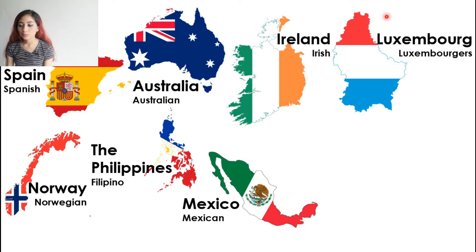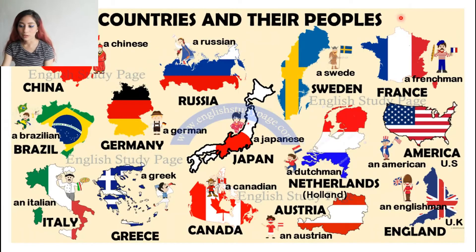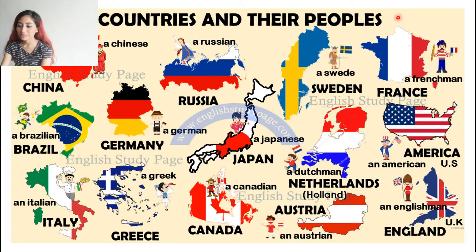Which of these countries would you like to visit? I would like to visit them all. For example, I would like to visit Ireland because Ireland is so beautiful. I would like to visit Australia because of the animals. Also, Greece has the most beautiful beaches in the world. Also France, also Canada, also England — all of those countries. Which one would you like to visit?